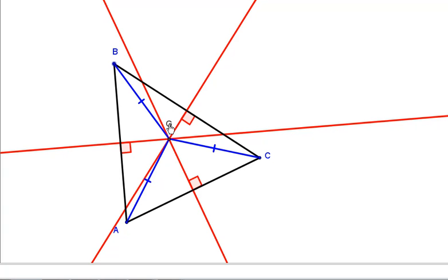That means that our circumcenter G is equidistant from all three vertices A, B, and C.